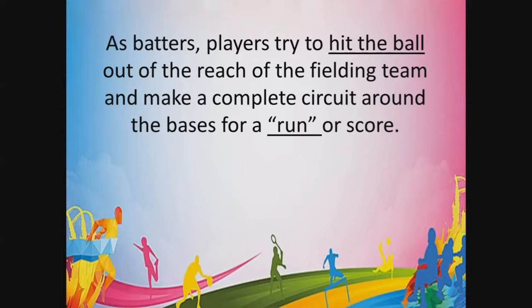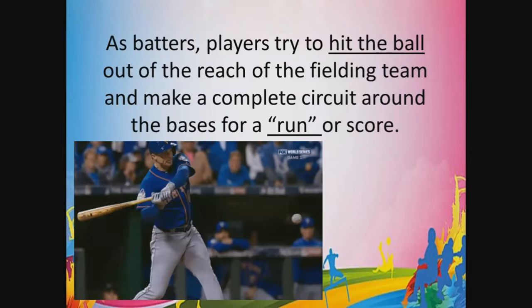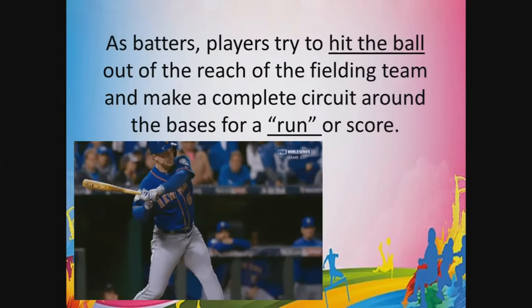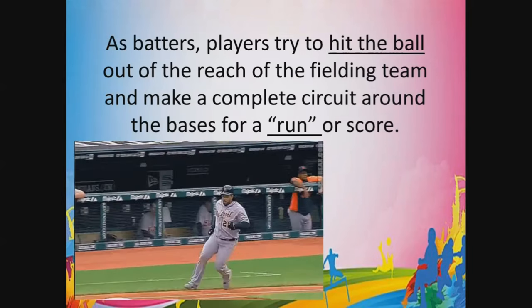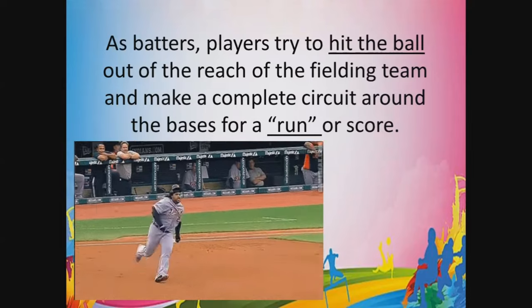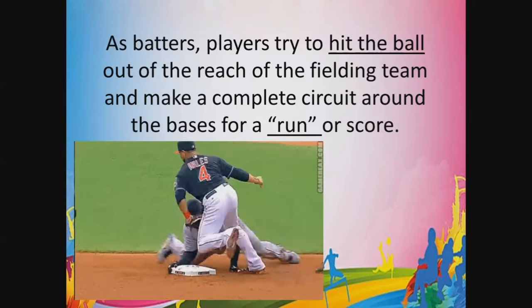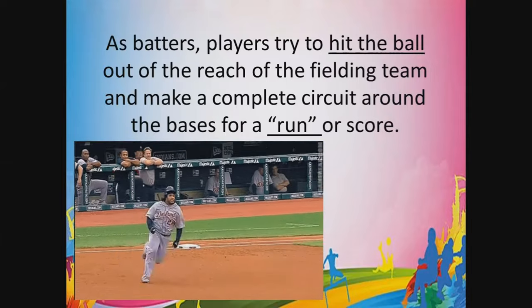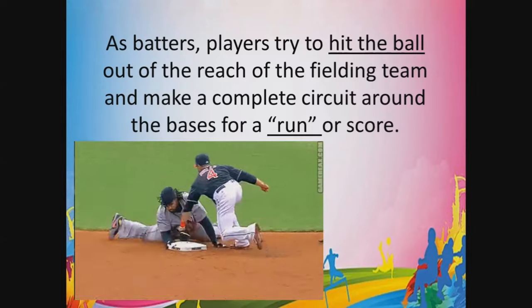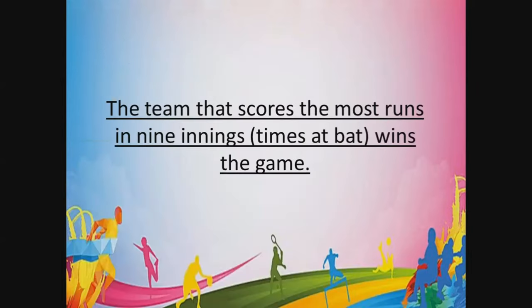As batters, players try to hit the ball out of the reach of the fielding team. After hitting the ball, the batter must make a complete circuit around the bases for a run, in order to get the score if the runner or batter reaches the home plate. The team that scores the most runs in nine innings, or times at bat, wins the game.